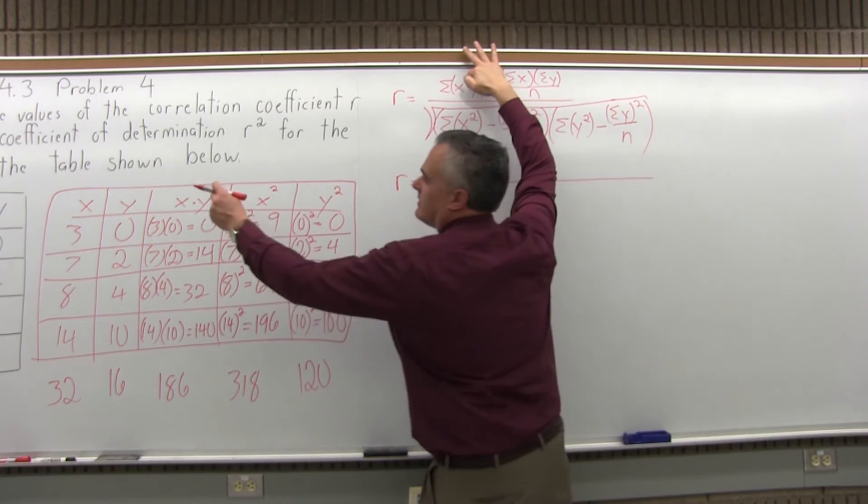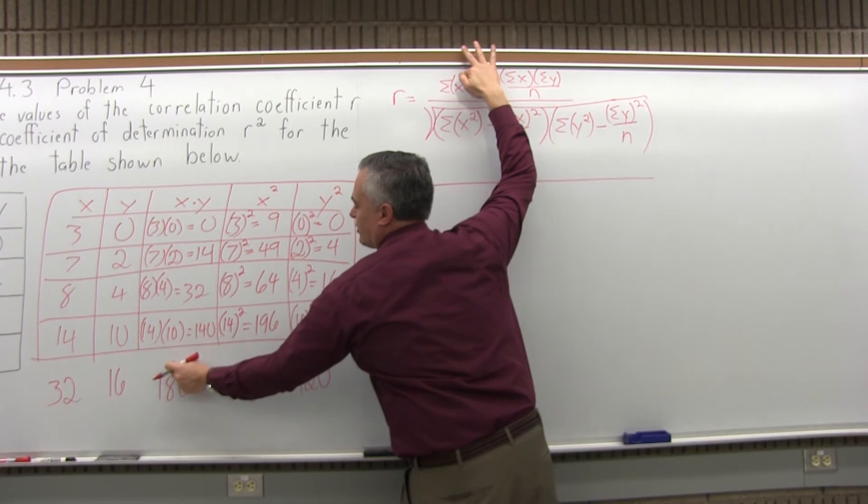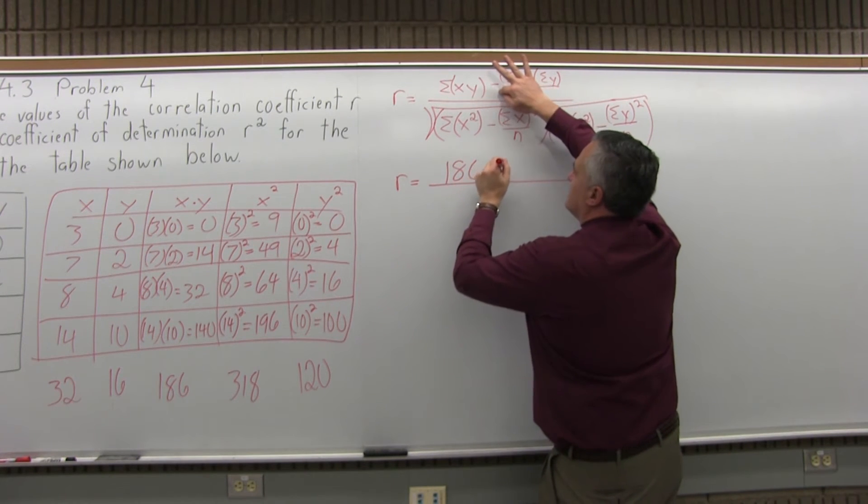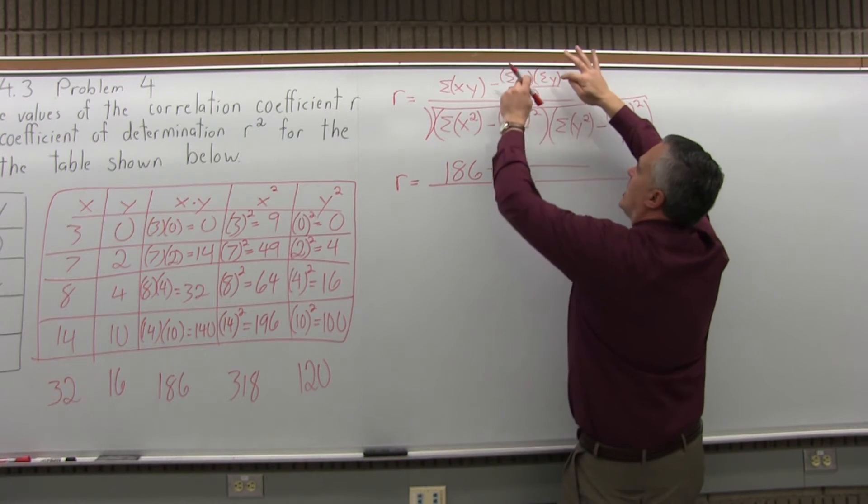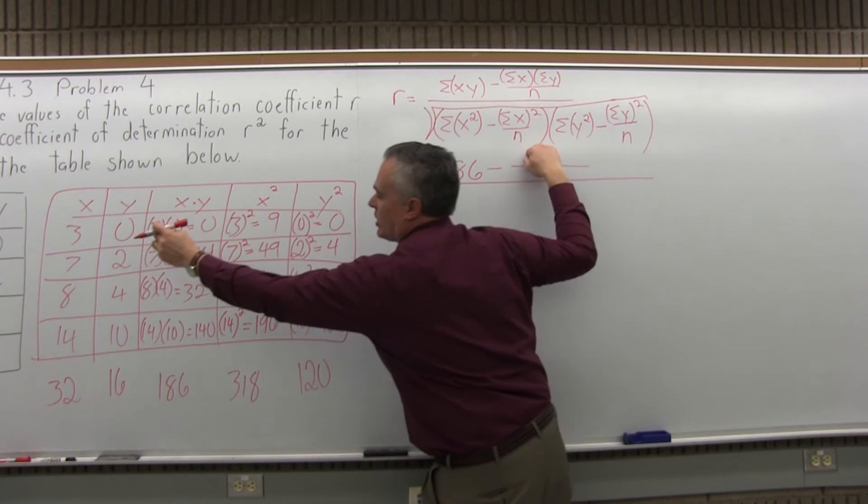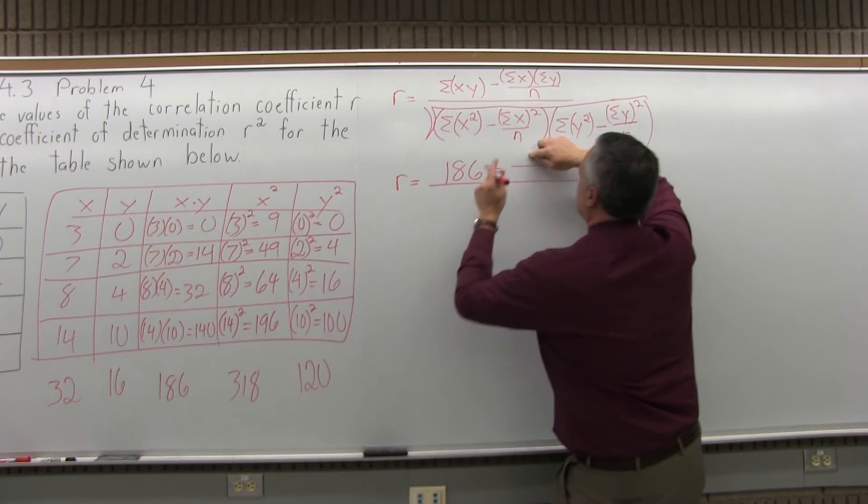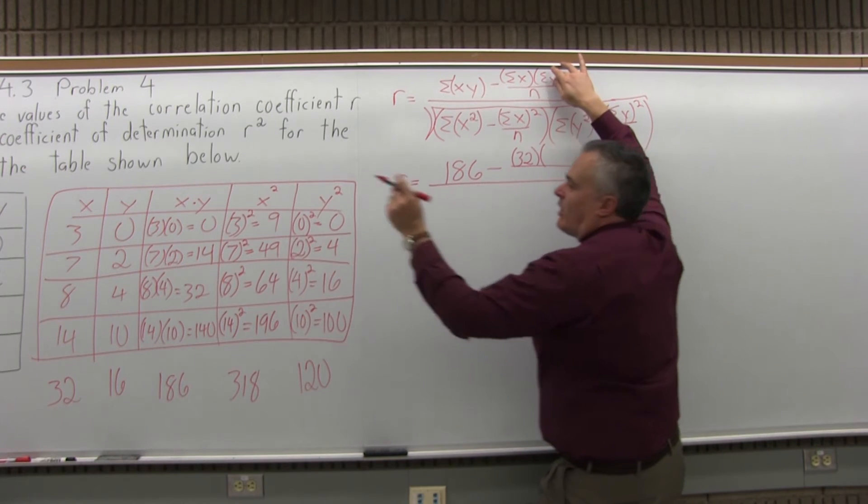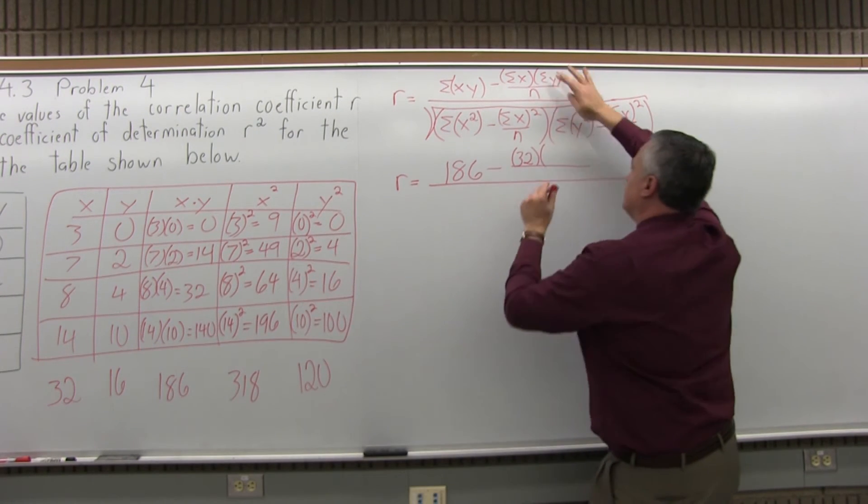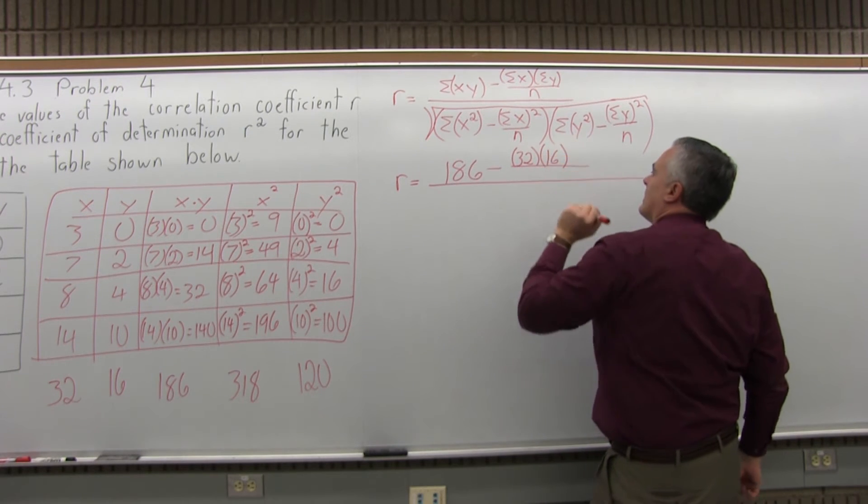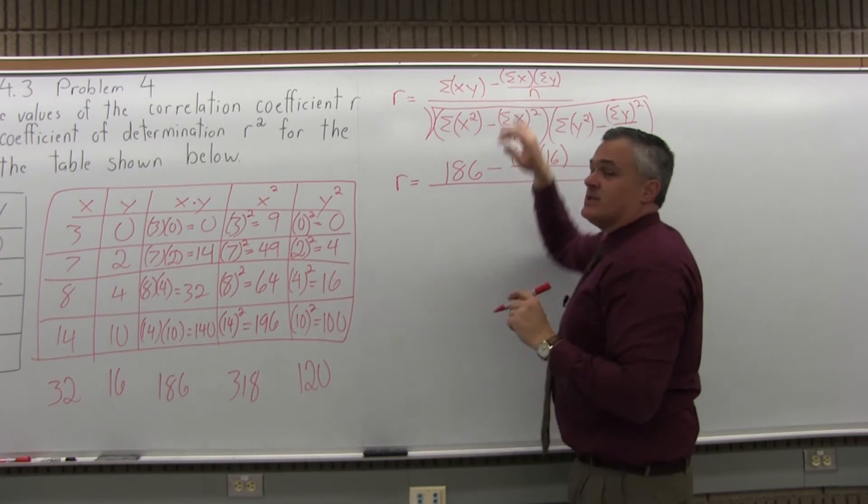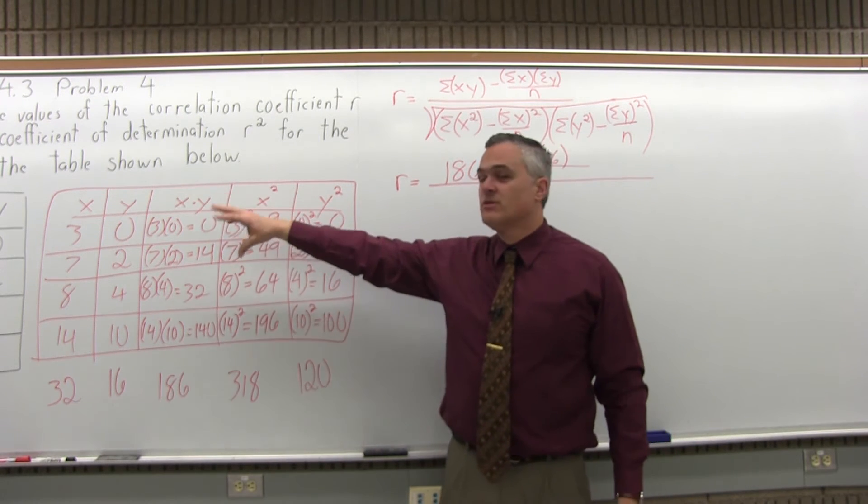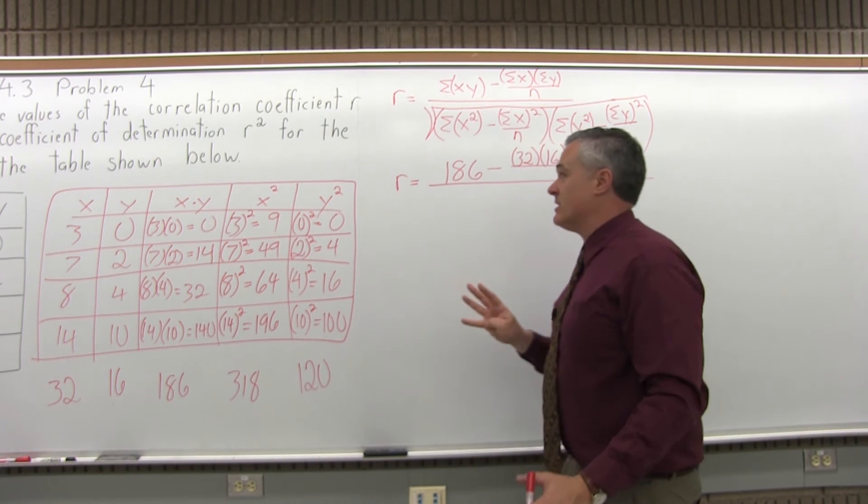First thing to fill in, total of x times y. I have an x times y column, the total is 186. And I have minus and I set up a fraction. Top of the fraction, total of x. The total of x is 32. Times total of y. The total of that y column is 16. And n, n is how many data points are given. It's an unrealistically small number of data points, there's only four. Like if I drew the scatter diagram for the original problem, there'd be four dots on it. So n is four.